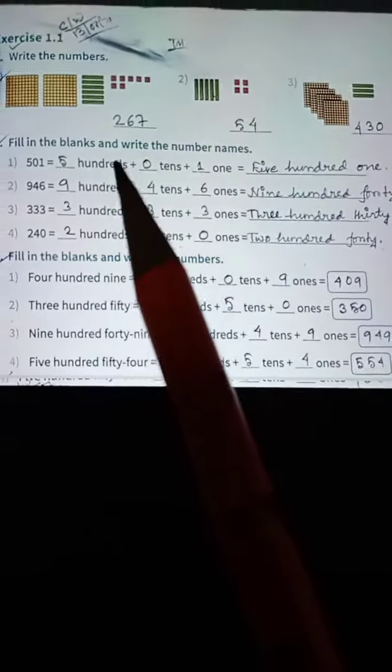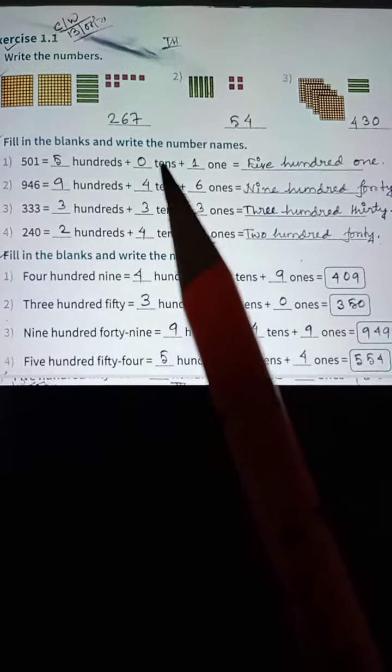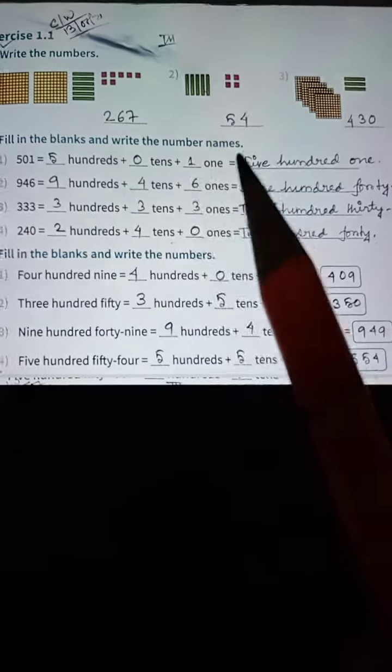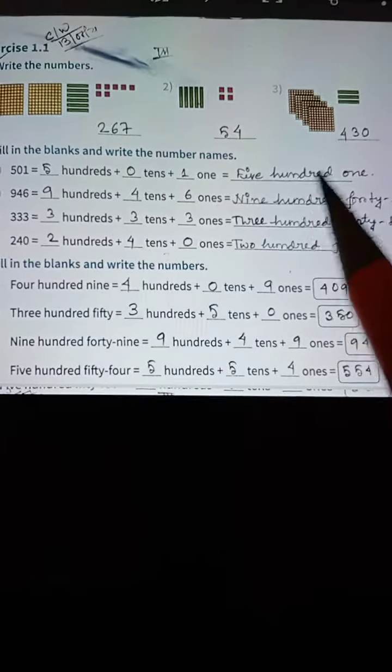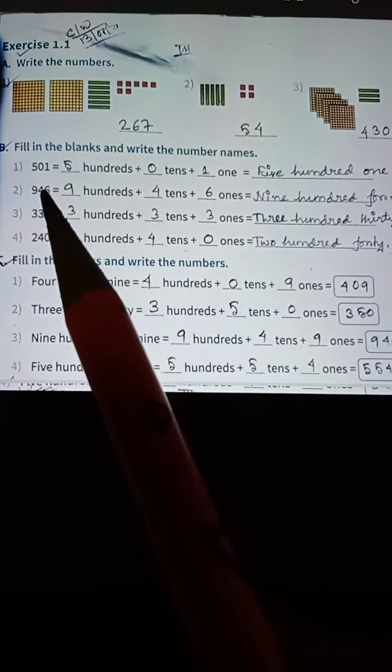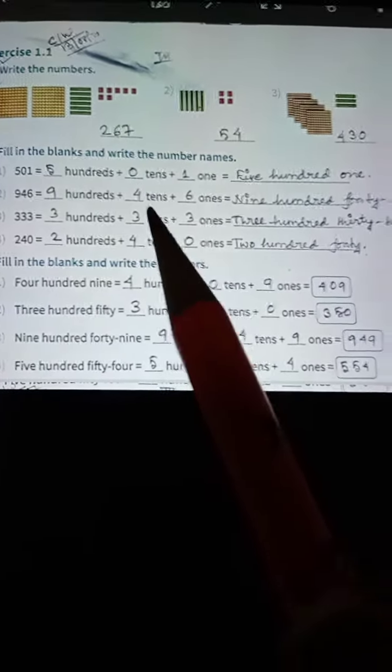Now next one, fill in the blanks and write the number names. 501, so 5 hundreds, 0 tens, and 1 one. 946, so 9 hundreds, 4 tens, and 6 ones.